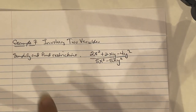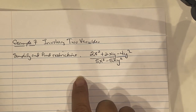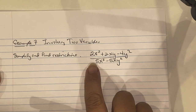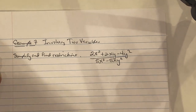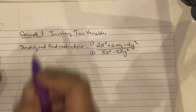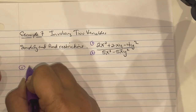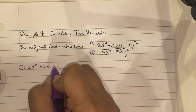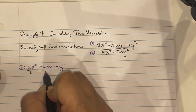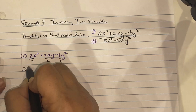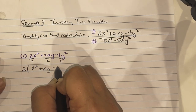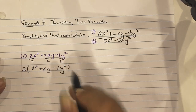Example 7 involves two variables. Again, simplify and find the restrictions. Label the numerator 1 and denominator 2. Working with the numerator: 2x squared plus 2xy minus 4y squared. All terms share a factor of 2, so factor out 2 to get x squared plus xy minus 2y squared.